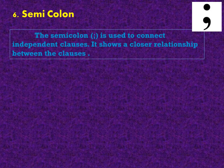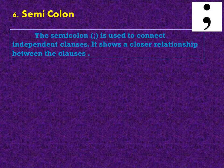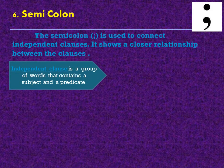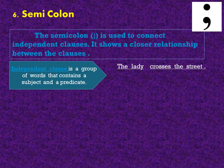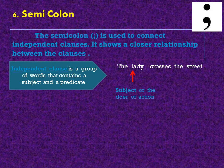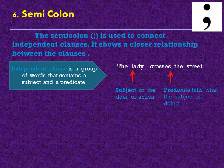Semicolon. The semicolon is used to connect independent clauses. It shows a closer relationship between the clauses. What is an independent clause? An independent clause is a group of words that contains a subject and a predicate. For example: The lady crosses the street. The lady is the subject or the doer of action, while crosses the street is the predicate which tells what the subject is doing. In other words, this is a complete sentence.